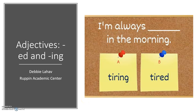Hi everyone. In this video, we're going to look at adjectives. In English, there are adjectives that end in -ed, like 'tired,' and adjectives that end in -ing, like 'tiring.' And we have to decide in a sentence like this, do we need the word 'tiring' or do we need the word 'tired'? I'm always tiring in the morning. I'm always tired in the morning. Let's take a look and see how we can understand this and make a decision.